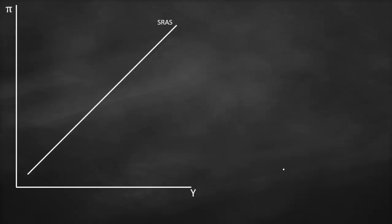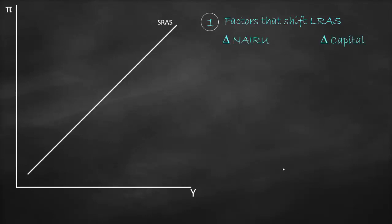We have an upward-sloping short-run aggregate supply curve. We'd like to know when this curve will shift, either to the right or to the left. The factors that shift the short-run aggregate supply curve include all factors that shift the long-run aggregate supply curve explained in the previous video: a change in the natural rate of unemployment, a change in capital (either physical or human), a change in natural resources, and a change in technology.